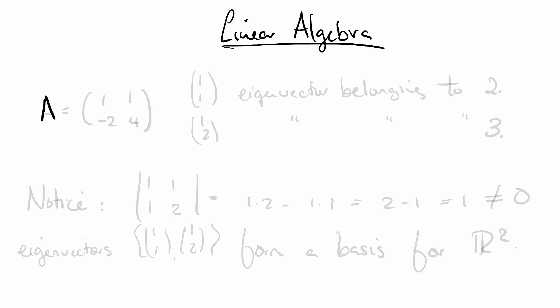We had a matrix A that is [[1, 1], [-2, 4]], and we were looking at the eigenvalues and eigenvectors of this matrix. We found that (1, 1) is an eigenvector of A belonging to the eigenvalue 2, and (1, 2) was an eigenvector of A belonging to the eigenvalue 3.